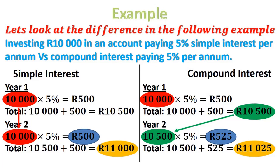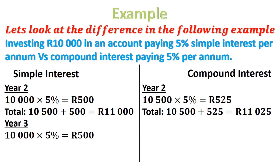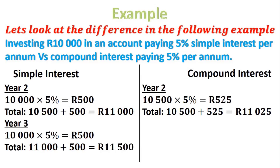Year three for simple interest is basically the same as year two. Again, we take 10,000, multiply it by 5%, and get 500 Rand. That means we have a total of 11,000 plus 500 Rand interest, giving us a grand total of 11,500 Rand.